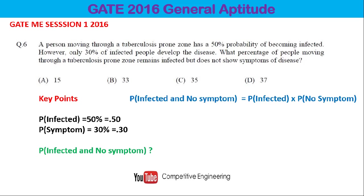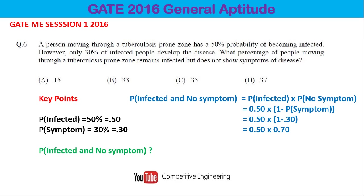This concept is explained in our previous 'Introduction to Probability' lecture. The probability of infected is 0.5, and the probability of no symptom equals 1 minus the probability of symptom, which is 1 − 0.3 = 0.7. So the result is 0.5 × 0.7 = 0.35, or 35%.